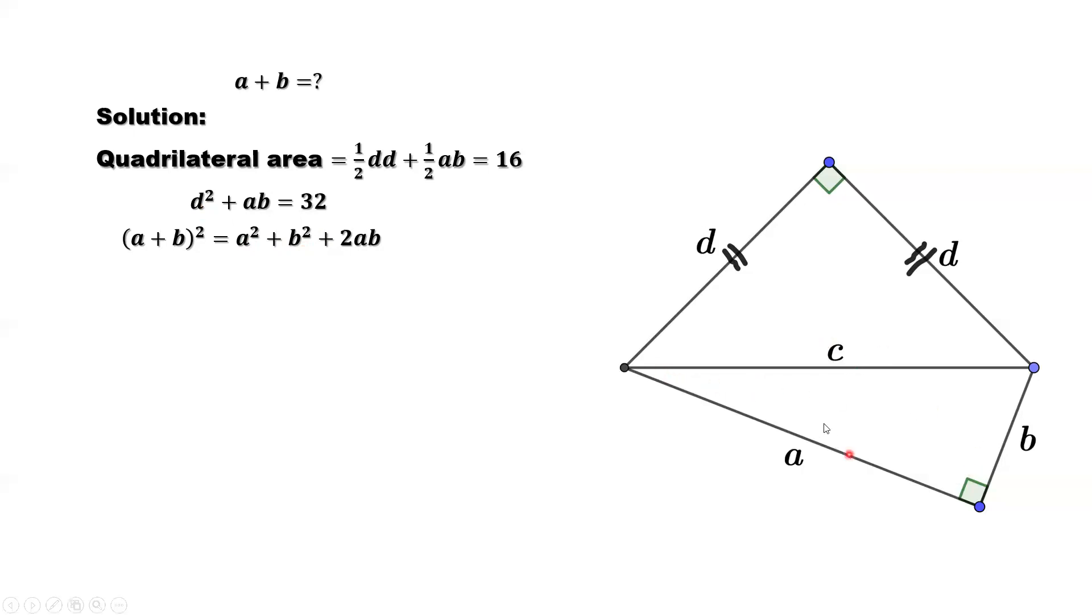From this right triangle, we know a² + b² = c². We can rewrite a² + b² in terms of c². c² is also equal to d² + d². So a² + b² = c² = d² + d².